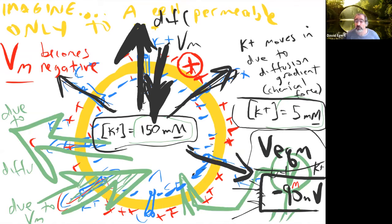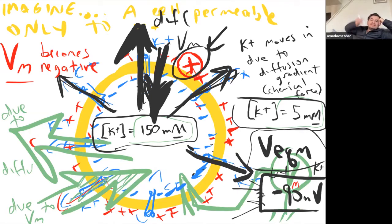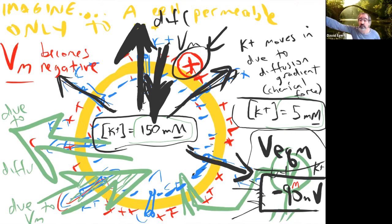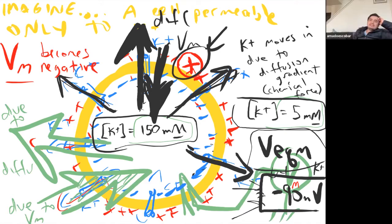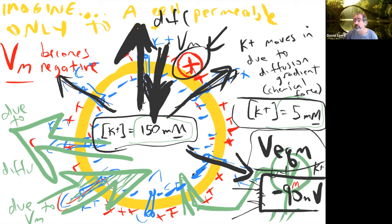I want to make sure everybody understands the basic idea: there are two opposing forces. If I am a cation like potassium, I'm driven one way by my diffusion gradient — that chemical force — but I can also be influenced by electrical forces due to a voltage across the membrane pulling me back in. The potassium equilibrium makes sense: the diffusion force pulls it out, the voltage pulls it back in, and at some point they balance.